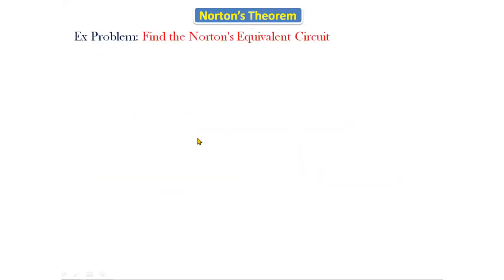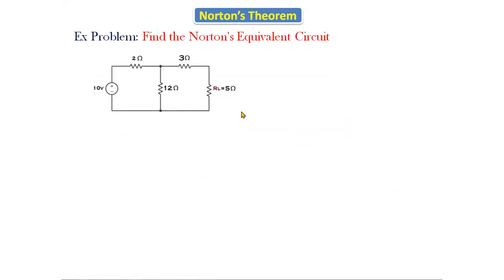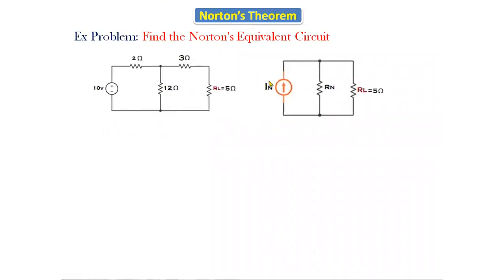Next, by taking one simple example problem, we will find Norton's equivalent circuit. This is the given circuit, and for the given circuit this is the total equivalent circuit. Now we will find Norton's current and Norton's resistance. We have already discussed the procedure to find I_N and R_N.